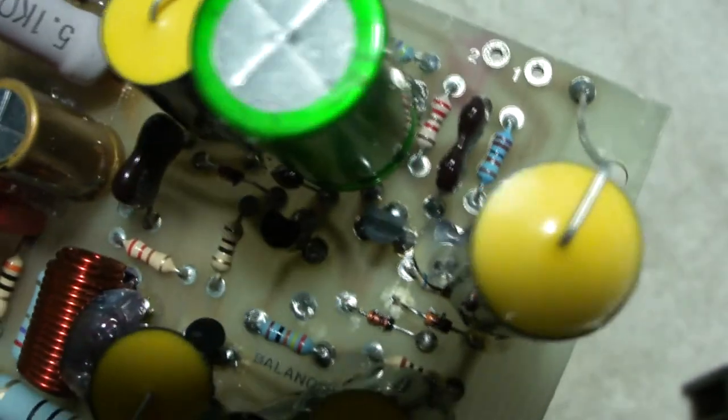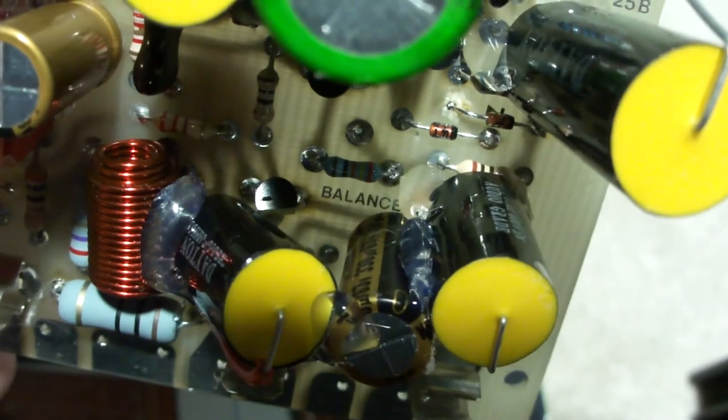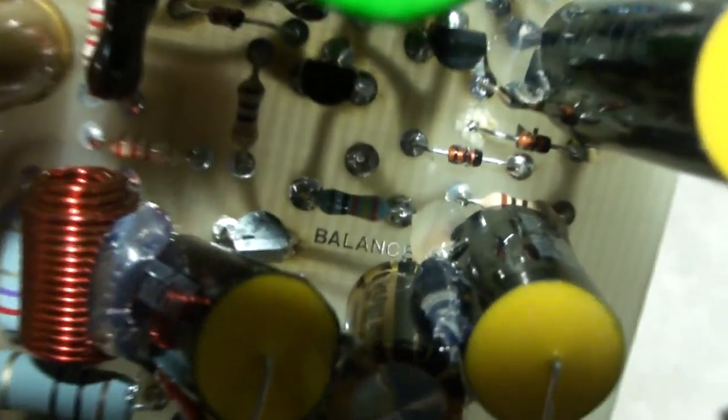Some resistor changes as well. You can see the balance pod has been replaced. It actually is used as a rheostat, the way it's wired. The newer balance thing, you can see right there.